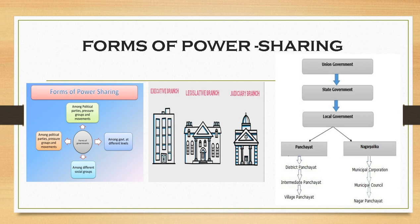Then you have the state government. The governments at the provincial level have different names in different countries. In India, they are known as state governments. In other countries such as Switzerland, they are known as cantons. This system is not followed in all countries — there are many countries where there are no provincial governments at all. But where there are different levels of government, the constitution lays down the powers of each level. This is what happened in Belgium and Sri Lanka — that division is known as federal division of power.